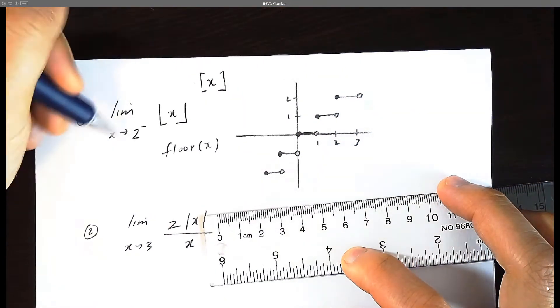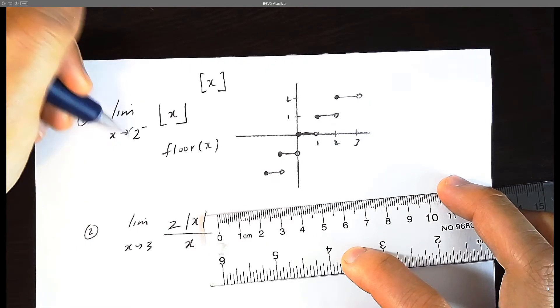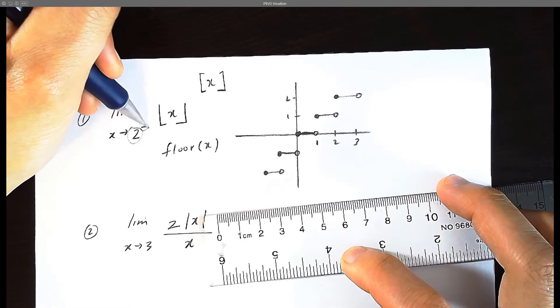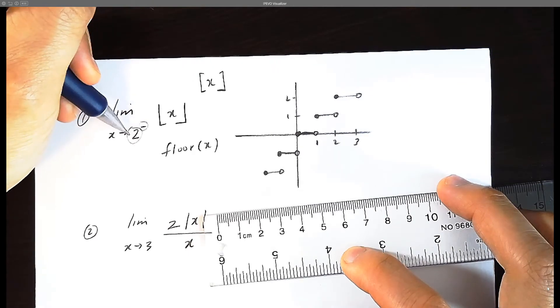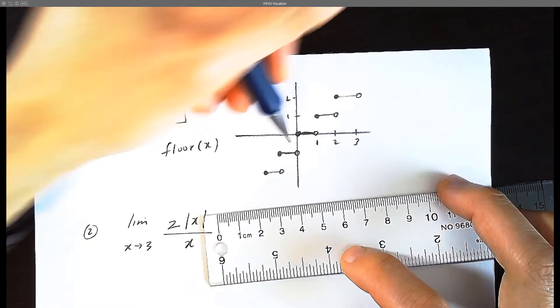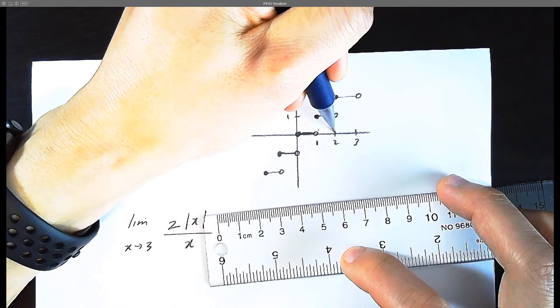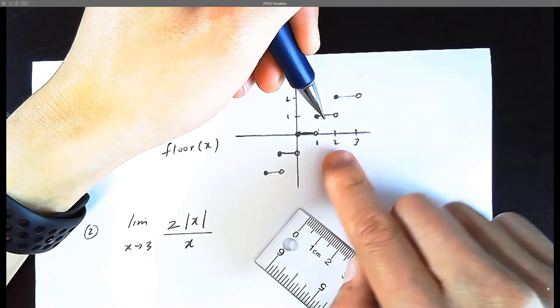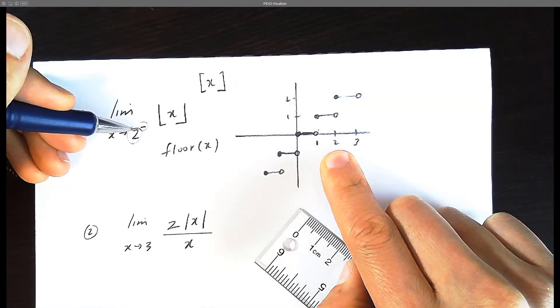Now in this case, the question is asking for the limit as you approach two from the left. Now be careful, this is not negative two. This is actually a positive two. So we're going to focus on here, two, from the left.